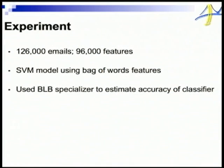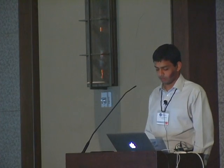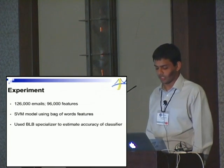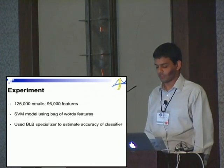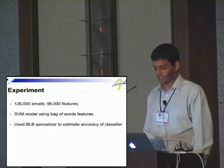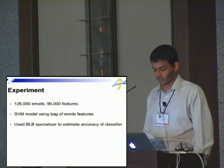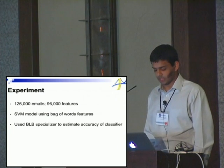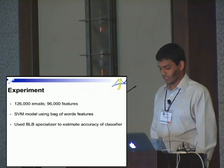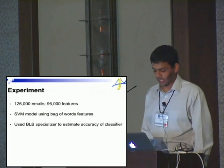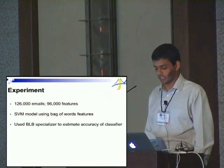To evaluate our BLB specializer, we designed an experiment to determine the accuracy of a machine learning model using BLB. We trained a support vector machine classifier on a publicly available data set containing over 1 million internal emails from the Enron scandal. We extracted features from 126,000 emails using a bag-of-words model and trained our model on 10% of this data to classify emails into folders. We then applied BLB to the remainder of the data. Each feature vector contained 96,000 features, each one byte, so the size of the data set was over 10 gigabytes.